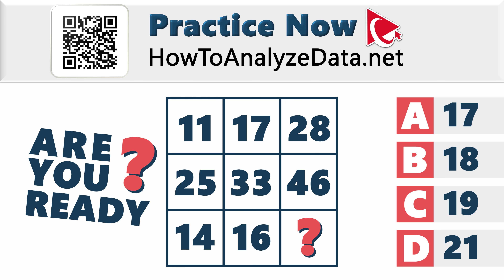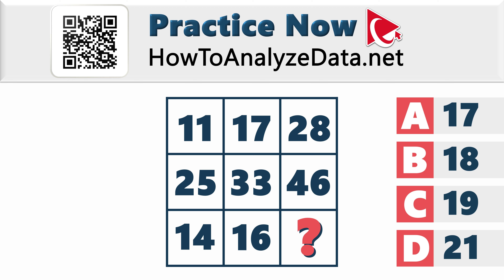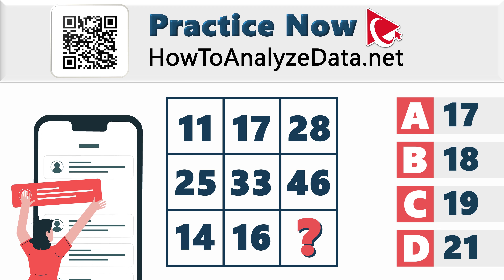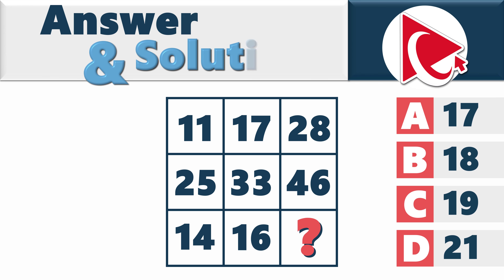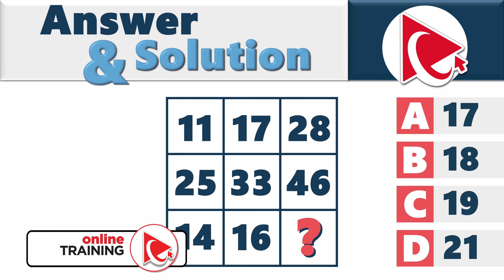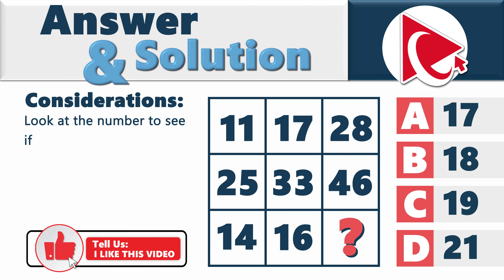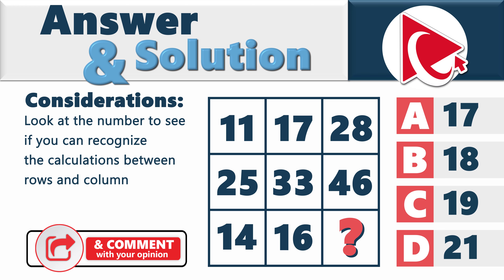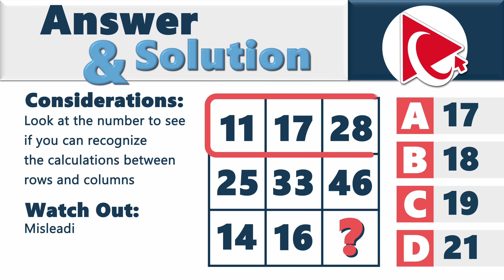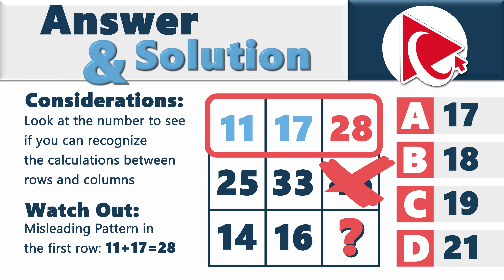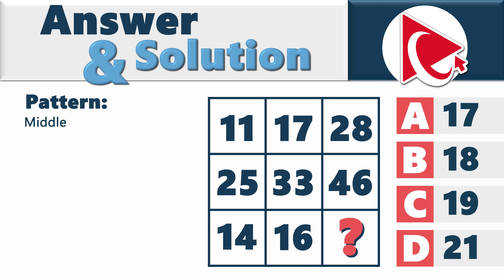Are you ready? I'm sure you solved it by now, so let's navigate the complexities together. If you have a better way to unlock this mystery or tips on solving these types of problems, please share in comments. Typically, when you see a matrix, you need to determine how to do calculations with the numbers — look at rows and columns to recognize the pattern. There is a misleading pattern here: in the first row, 11 plus 17 does equal 28, but this pattern does not continue.